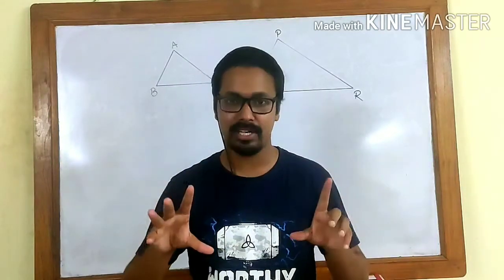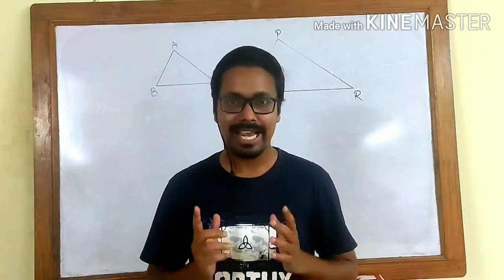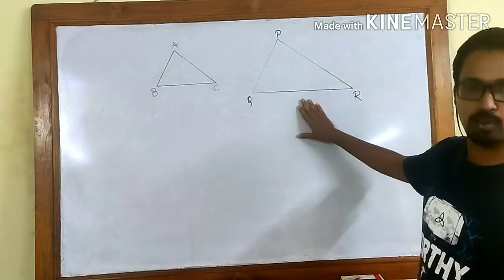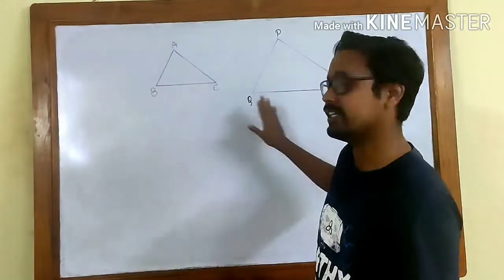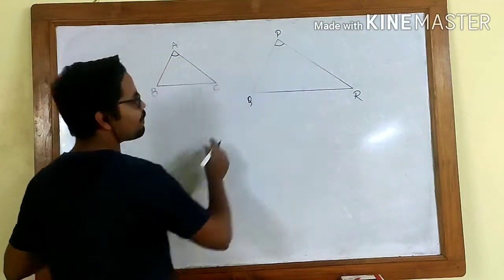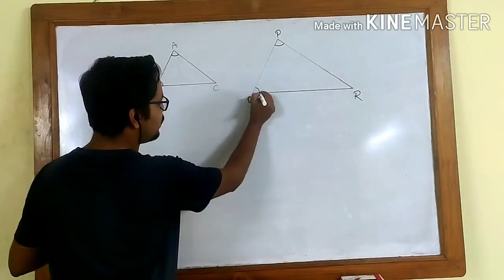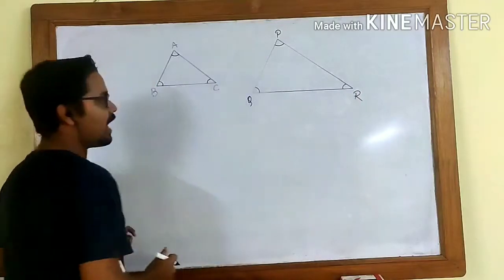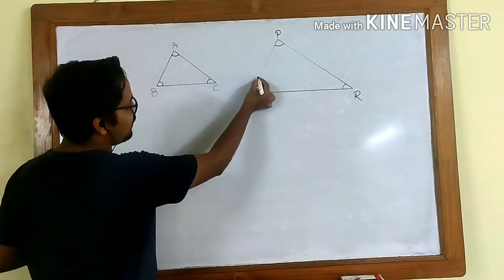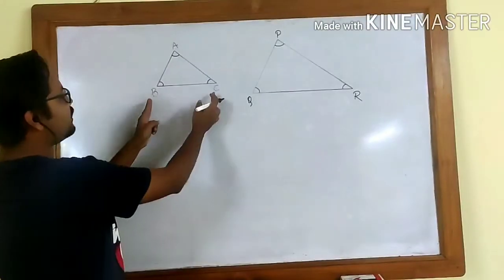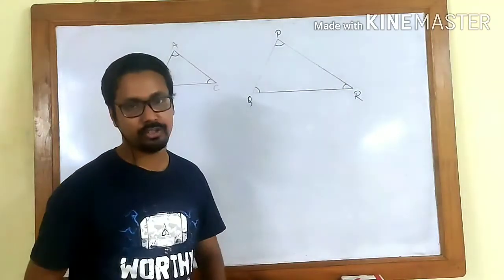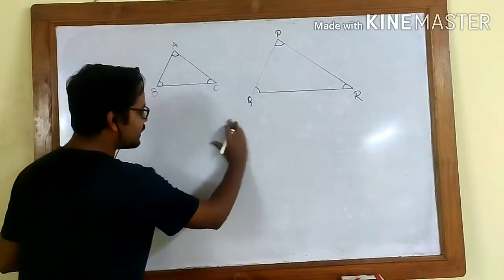If two triangles are similar, then their corresponding angles will be equal and their corresponding sides will be in proportion. So if I have two triangles, triangle ABC and triangle PQR, then if the two triangles are similar, we expect angle A equal to angle P, angle B equal to angle Q, and angle C equal to angle R.